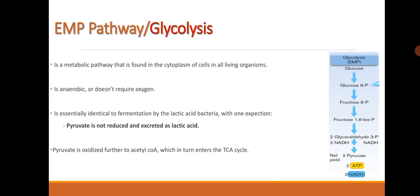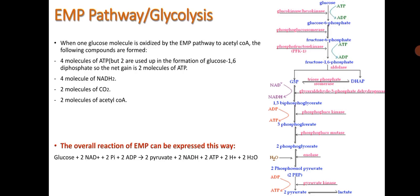The pyruvate is oxidized further to acetyl-CoA, which in turn enters the TCA cycle. When one glucose molecule is oxidized by the EMP pathway to acetyl-CoA, the following compounds are formed: 4 molecules of ATP, but 2 are used up in the formation of glucose 1,6-diphosphate, so the net gain is 2 molecules of ATP. Also formed are 4 molecules of NADH2, 2 molecules of CO2, and 2 molecules of acetyl-CoA.